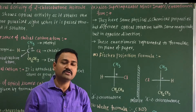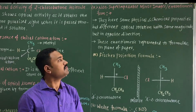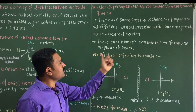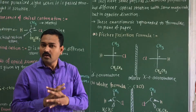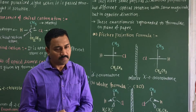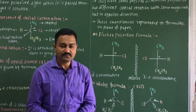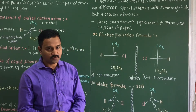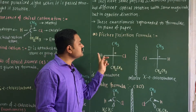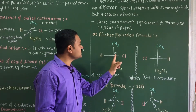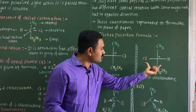The enantiomeric forms or non-superimposable mirror images can be represented on a plane of paper using two different formulas. The first is Fisher's projection formula, which represents the two-dimensional structure of 2-chlorobutane. In Fisher's projection, the molecule is represented by vertical and horizontal lines, and the intersection point is the chiral carbon atom of the molecule.